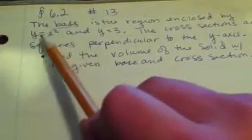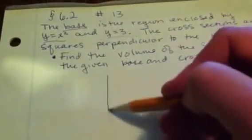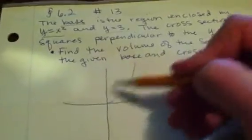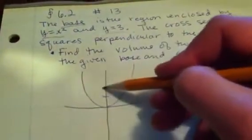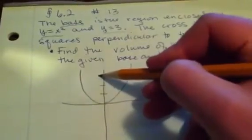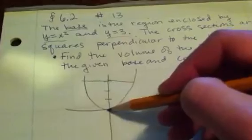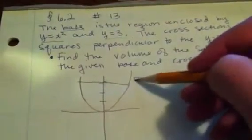So we start with the base. The base is enclosed by y equals x squared and y equals 3. If we draw that, we have this base, and it looks like here's your y equals x squared. Let's say this is 1, 2, 3, so here's y equals 3. We'll just pretend this is a symmetric, perfectly beautiful y equals x squared.